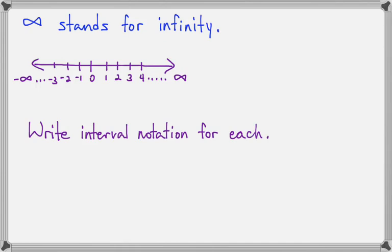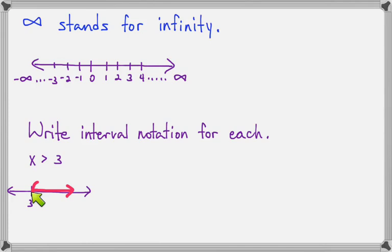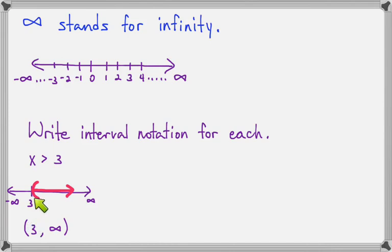We're going to practice by writing the interval notation for each of these inequalities. Here is x is greater than 3, and we know the graph looks like this. The interval notation: the shading starts at 3 and goes toward positive infinity, so we write from 3 to infinity. Notice that because there are parentheses on the graph, there are parentheses on the interval, and the shading continues to the right forever toward infinity.